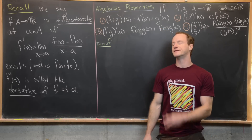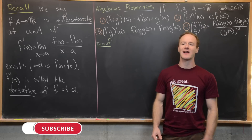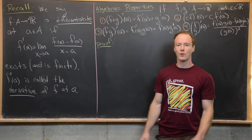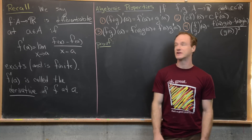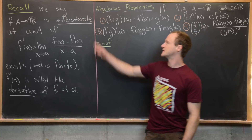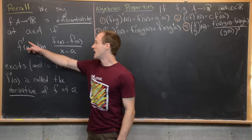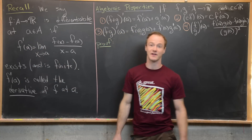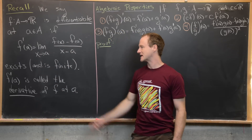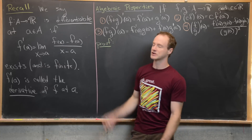In the last two videos, we've looked at the notion of differentiability and the derivative of a function, and we want to continue that by looking at some familiar derivative rules in this video. But before we do that, let's recall the definition. We say that f from A to ℝ, where A is a subset of the real numbers, is differentiable at a point a in A if f prime of a — which equals the limit as x goes to a of [f(x) minus f(a)] over [x minus a] — exists and is finite.